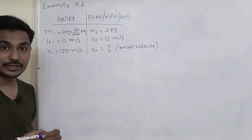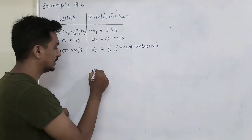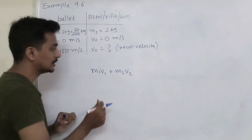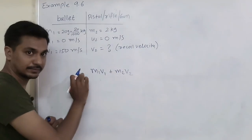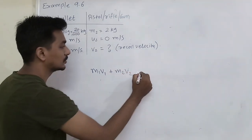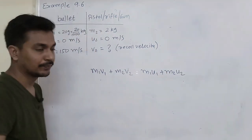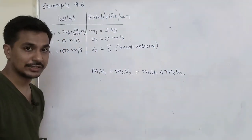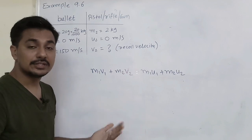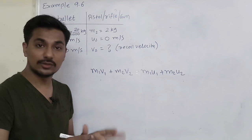This question is based on conservation of momentum. The equation of conservation of momentum is: M1·V1 + M2·V2 = M1·U1 + M2·U2. The left side is the final momentum of the system and the right side is the initial momentum of the system. According to the law of conservation of momentum, in an isolated system the initial and final momentum of the system is conserved — meaning there is no change.